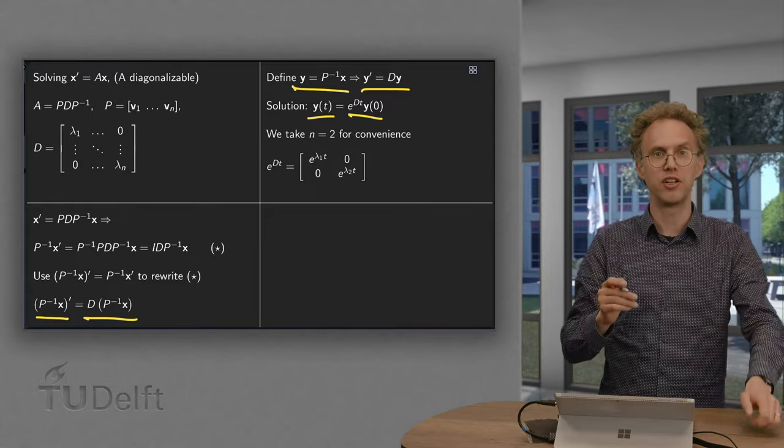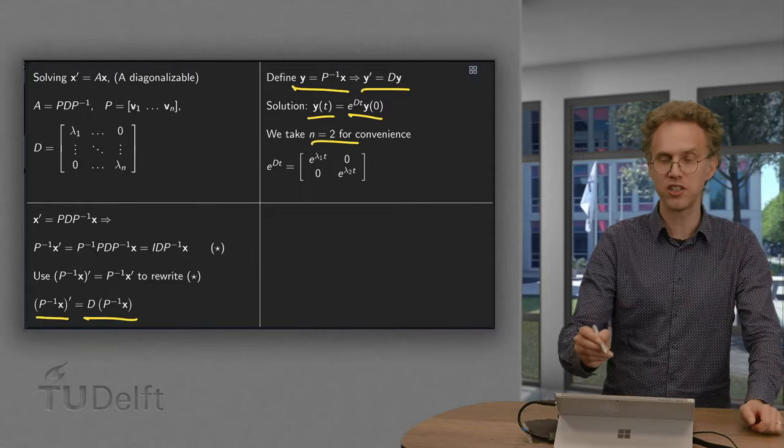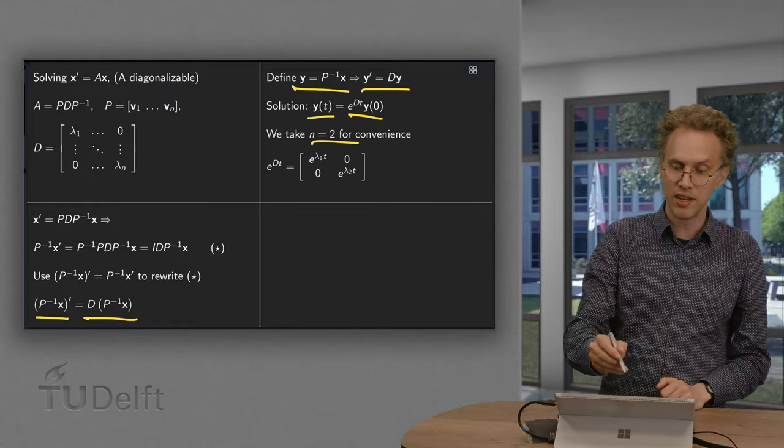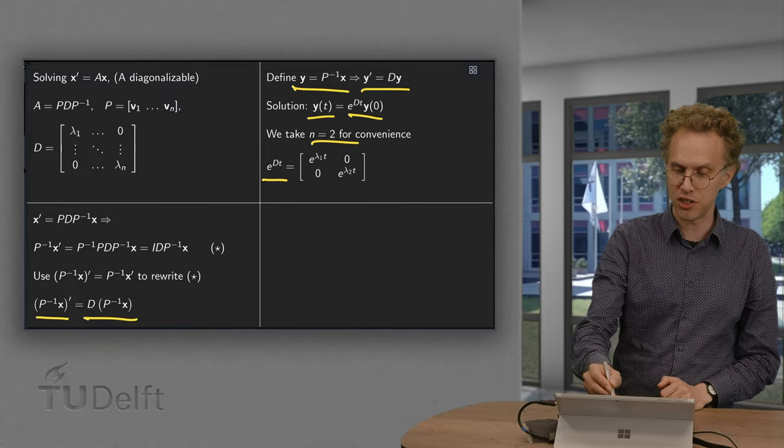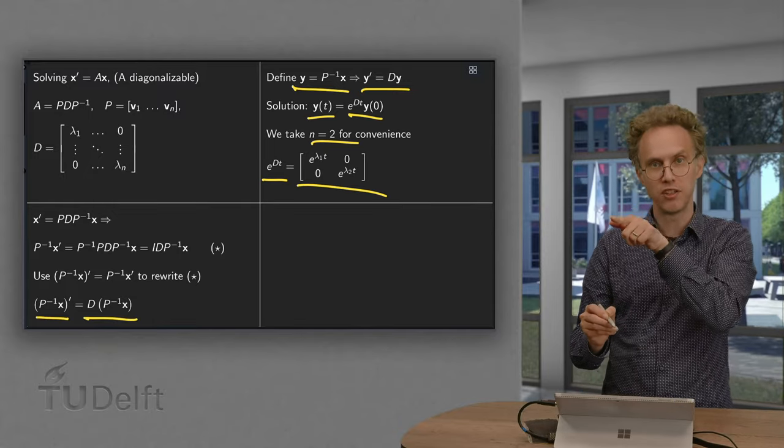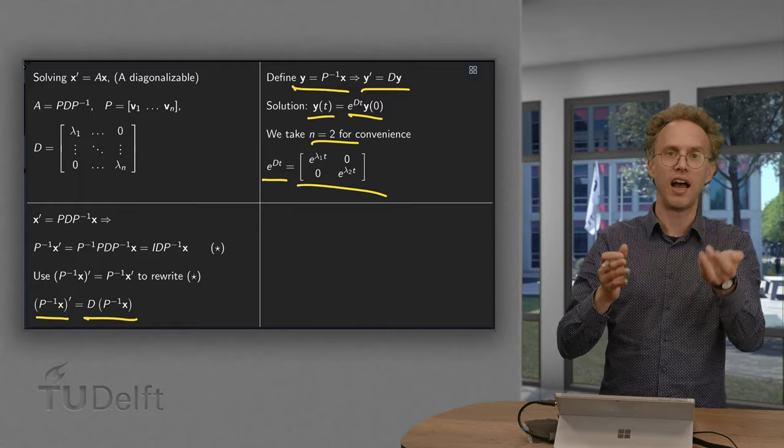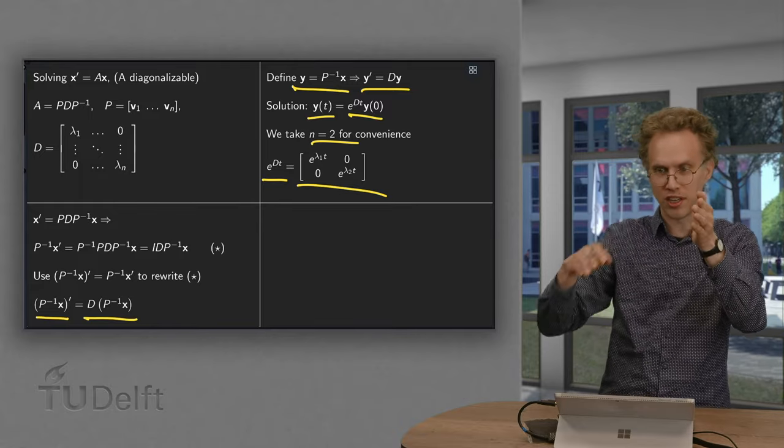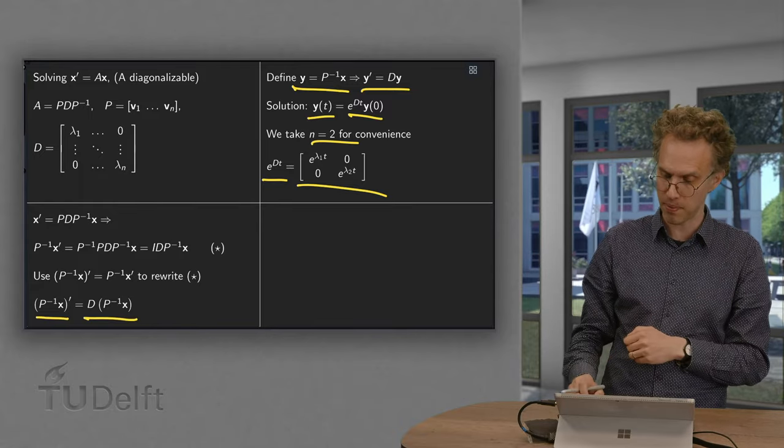We take again as often n equals 2 for convenience in order to not get big matrices. Then e to the power dt is just e to the power lambda 1t, e to the power lambda 2t. And for larger matrices you just get a larger matrix, but it continues the same way.